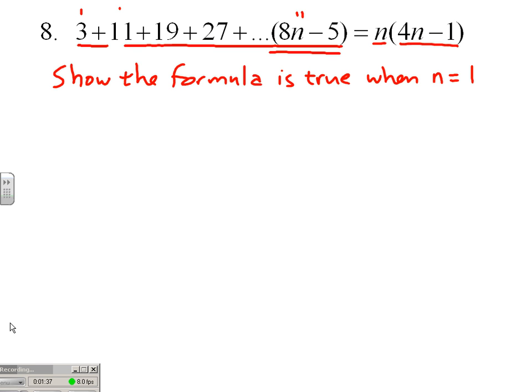When n equals 1, the left side of our equation just becomes the first term, 3. When n equals 1, the right side of the equation becomes 1 times 4 times 1 minus 1, or 1 times 4 minus 1, which is 3. So 3 equals 3, which in domino speak means yes, the first domino is going to tip.